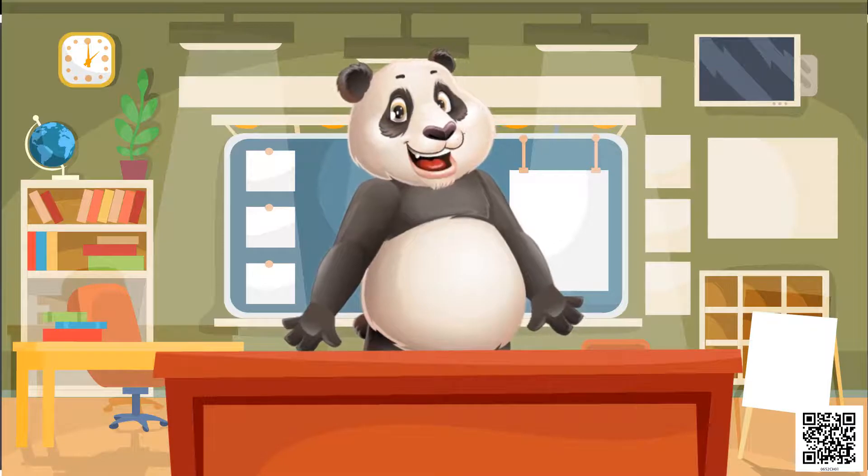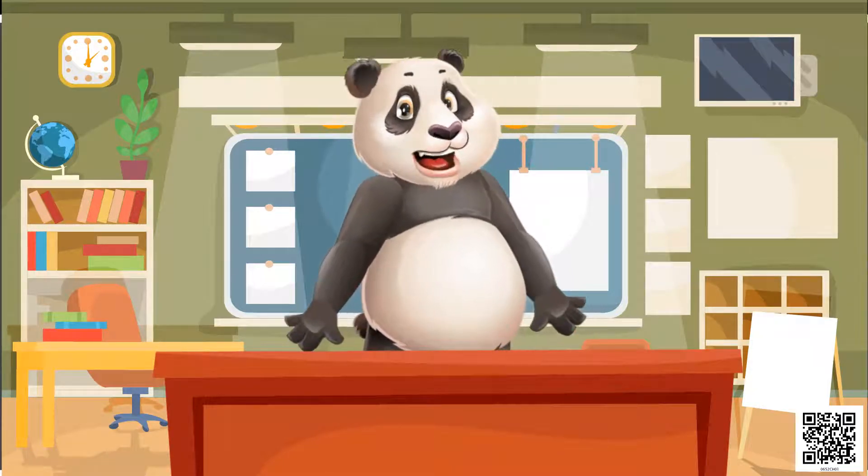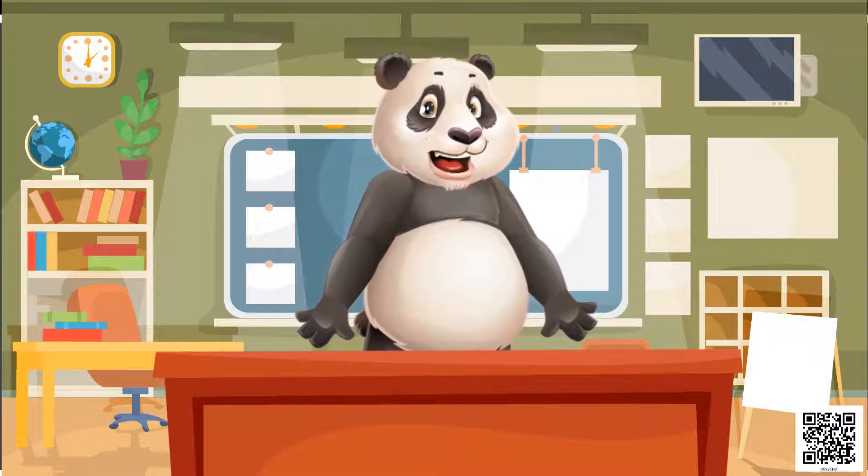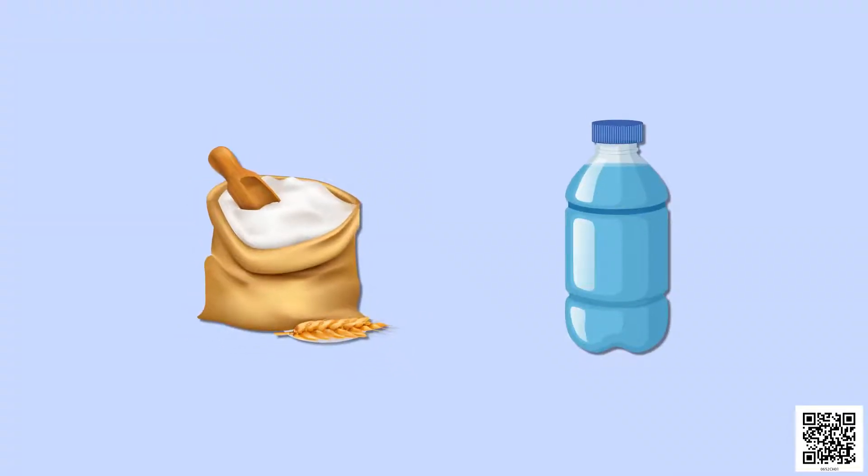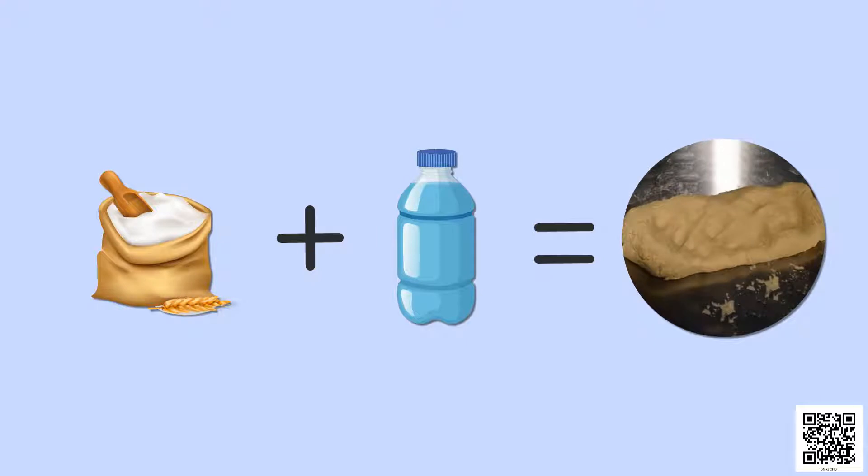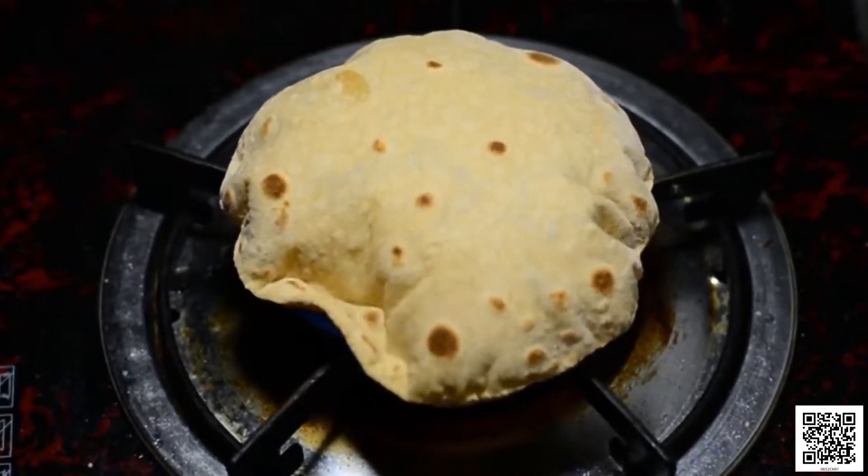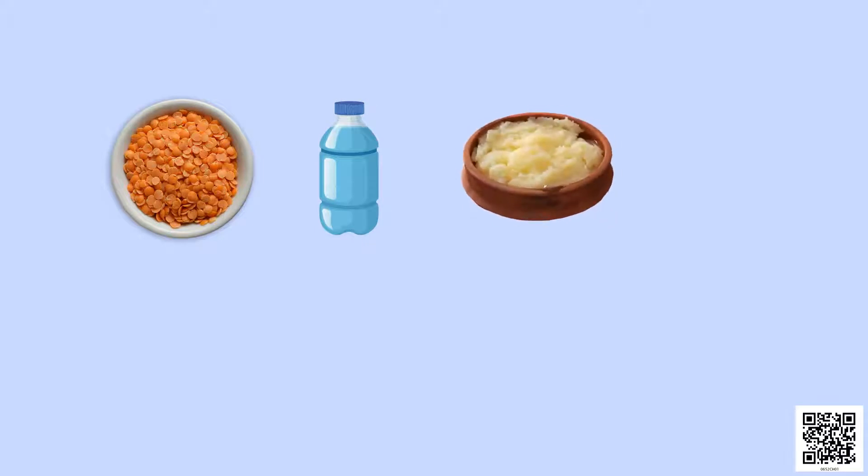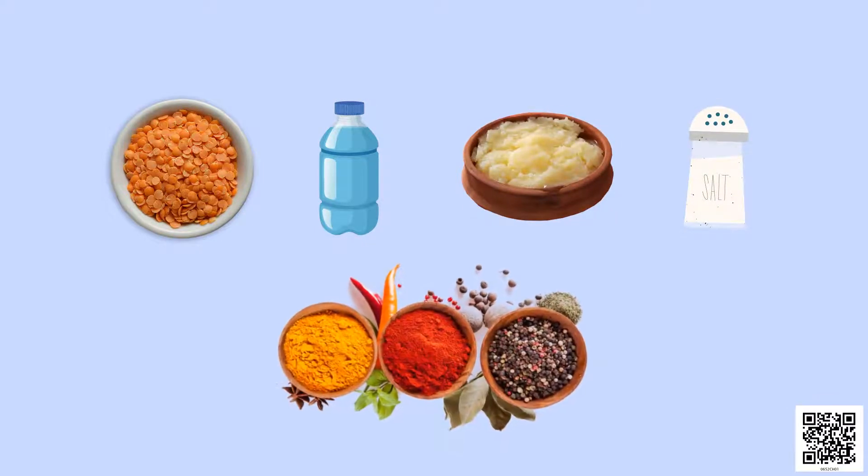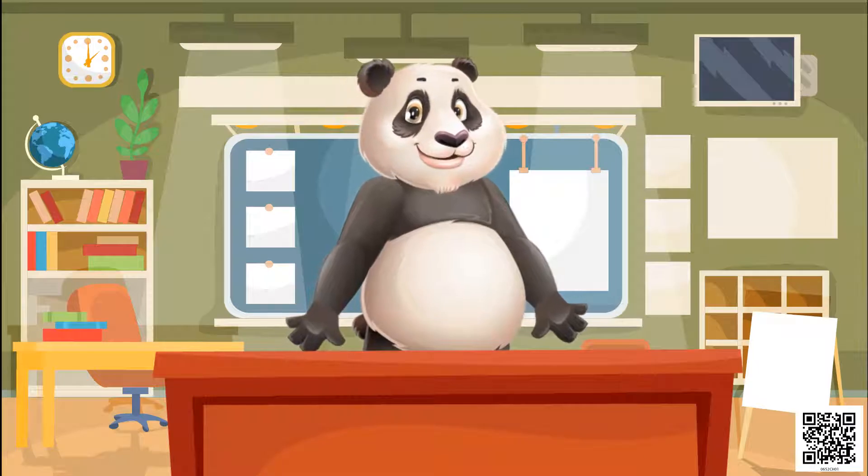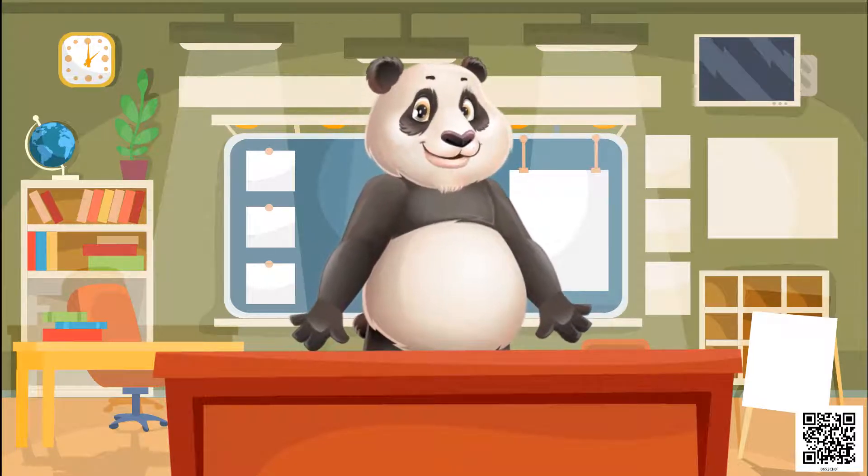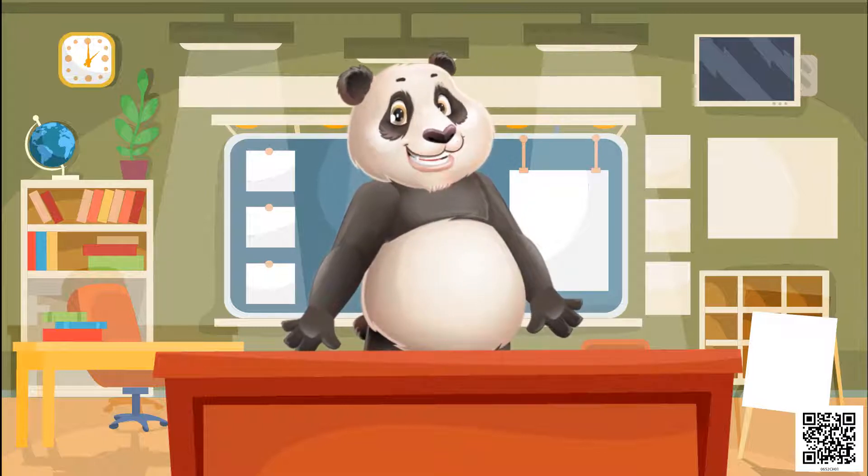The materials used for making food are known as ingredients. For example, for making chapatis we need flour and water. We prepare dough by mixing flour and water, and with dough chapatis are made. For making dal we need pulses, water, ghee or oil, salt, and different spices. All these are mixed together in appropriate quantities and are cooked on a stove.